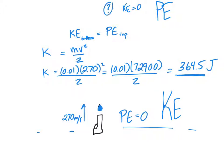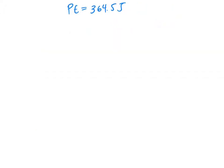That's going to become our potential energy up here at apogee at the highest point. So if at the top our potential energy is 364.5 joules, we could say our potential energy is equal to mass times gravity times height. So our mass is 0.01, G is 9.8, we don't know our height.